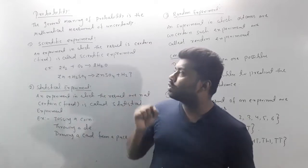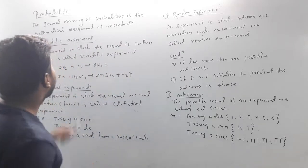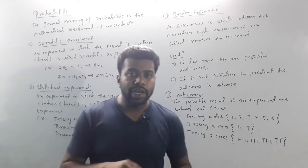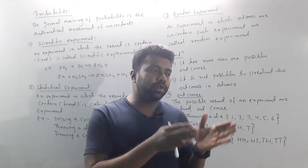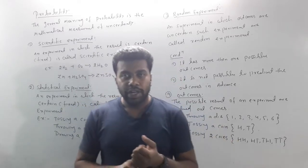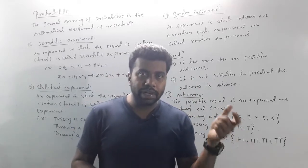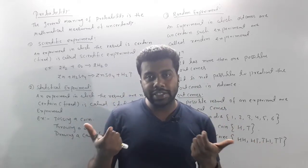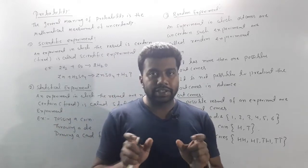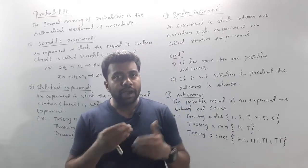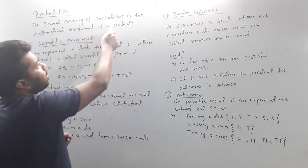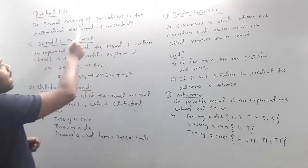So let's start with the basic terms. Probability — the word comes from possibility. Possibility means number of chances. For example, if you have a good job, then your answer is either yes or no. So the number of possible chances — the general meaning of probability is the mathematical measurement of uncertainty.